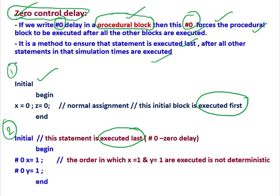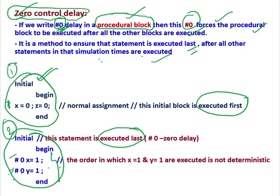But when we include this #0 delay — here in the first initial block there is no #0 delay, but in the second there is a #0 delay. So if we write this #0 delay in a statement inside an always block, the simulator ensures that the statement where #0 is written will be executed last. That means first this block will be executed, then this block will be executed, because this #0 delay forces the procedural block to be executed at the end.